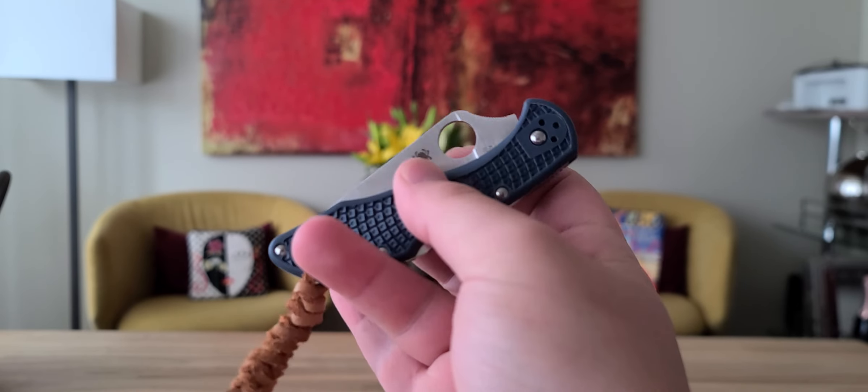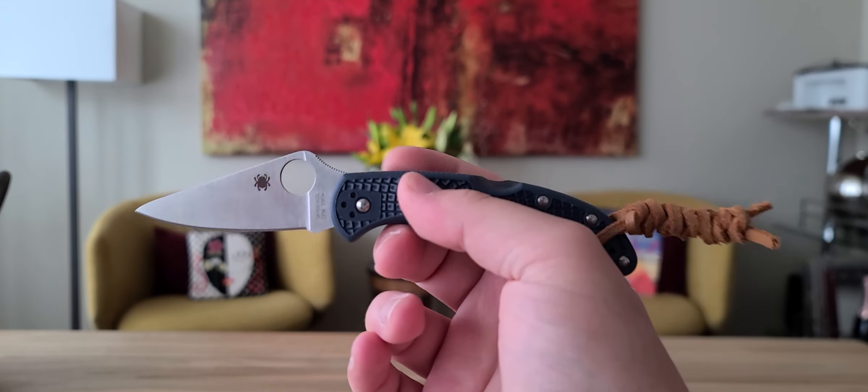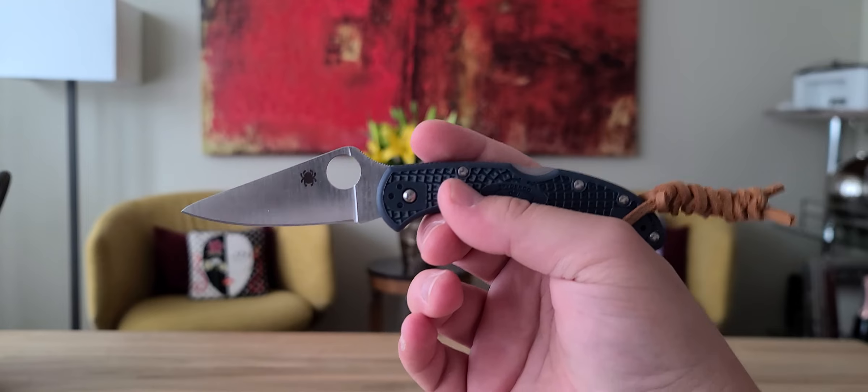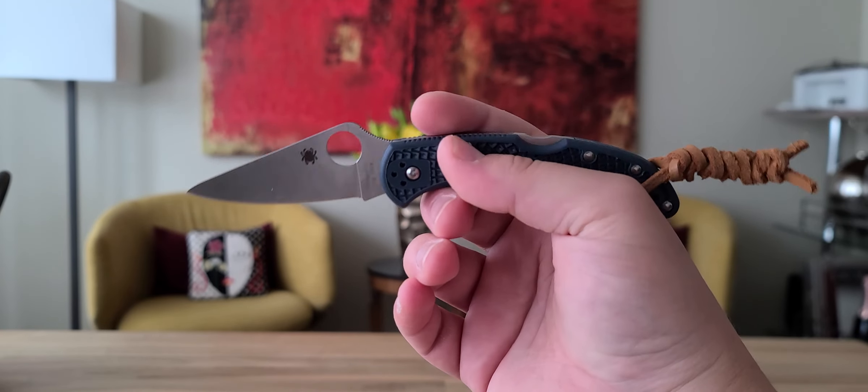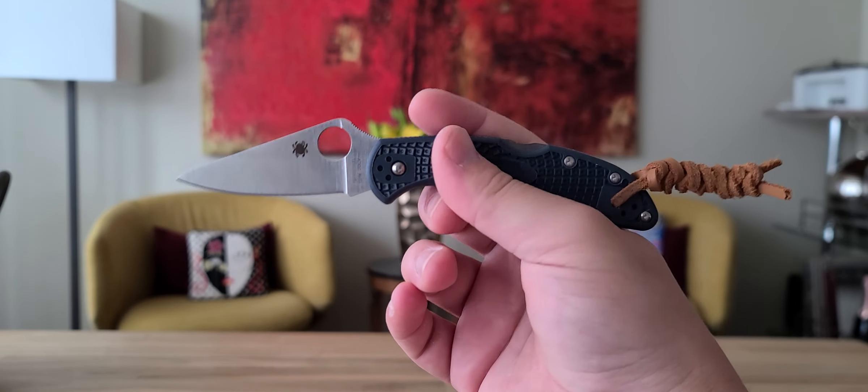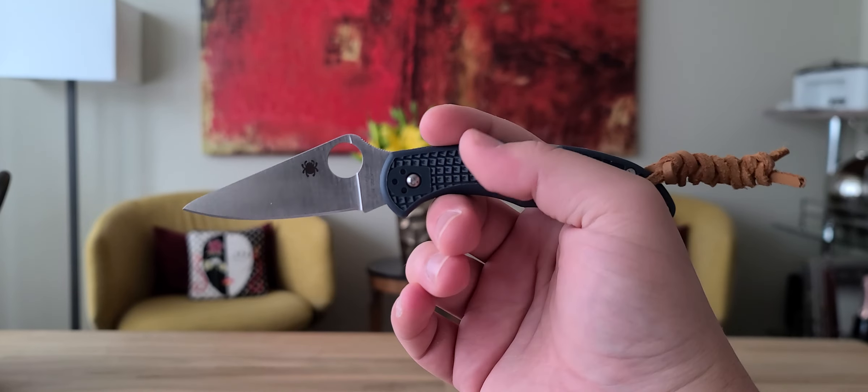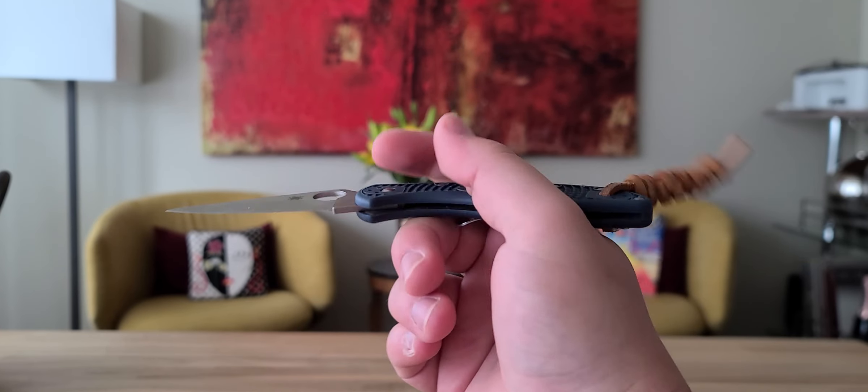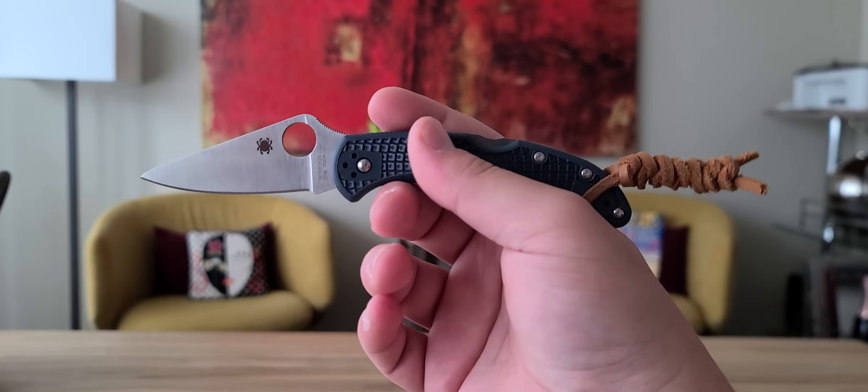The 20CV - I think there are some S30V Delicas out there now. I think I paid like $109 for this, and the regular Delicas are in the 80s now. It's totally worth the extra $25 to get the 20CV. Don't go for the S30V, get the 20CV. Great item here.